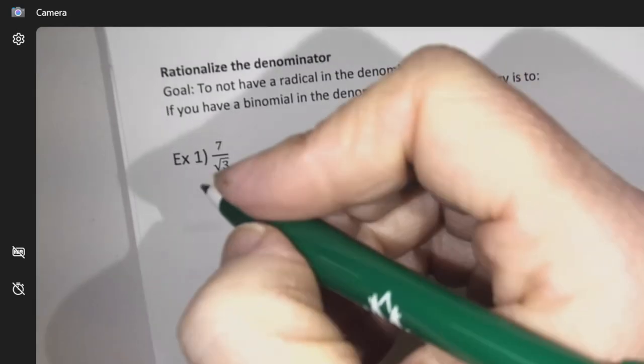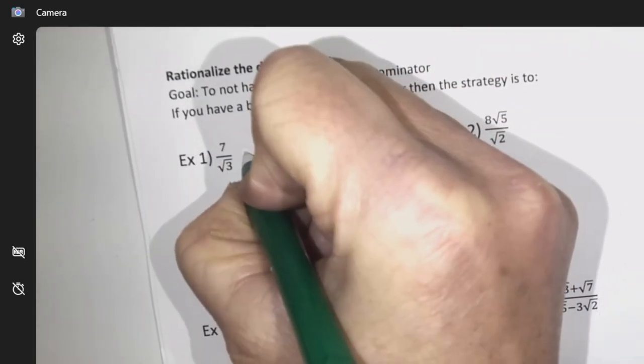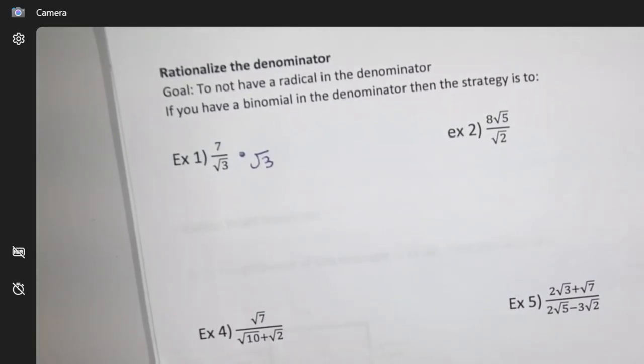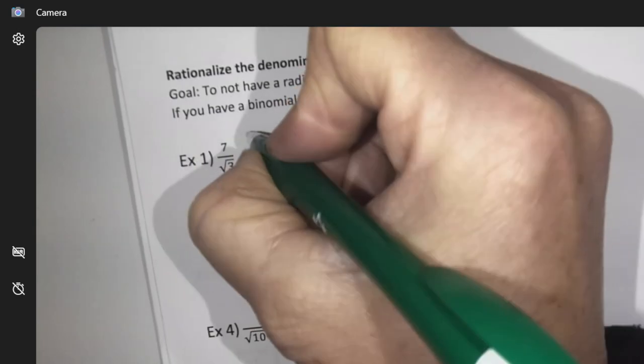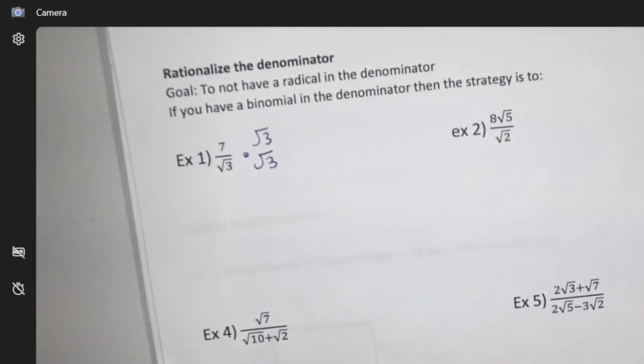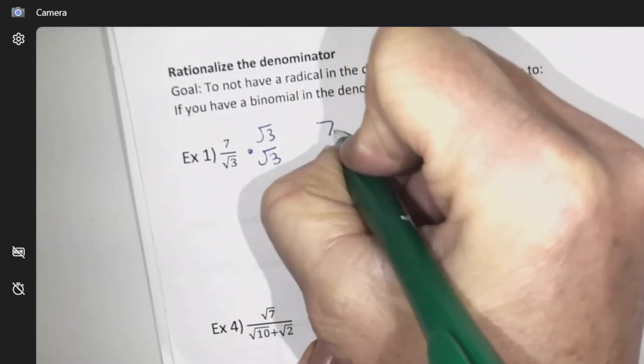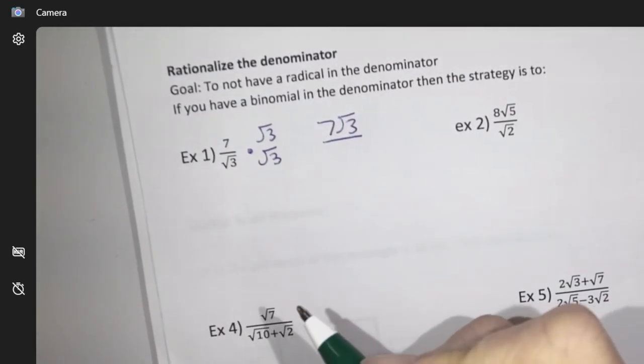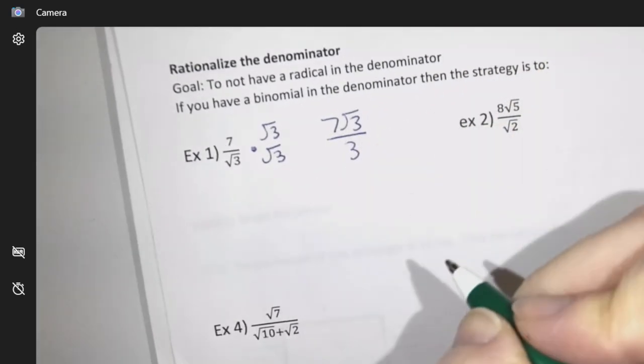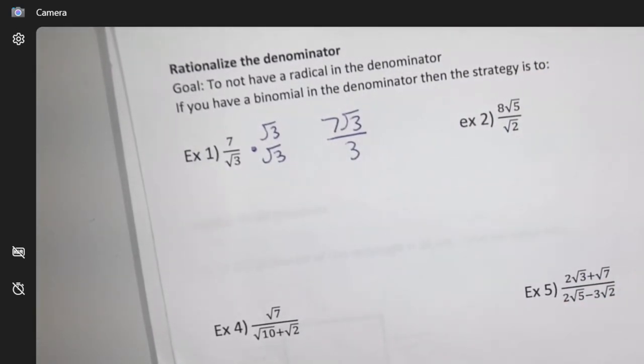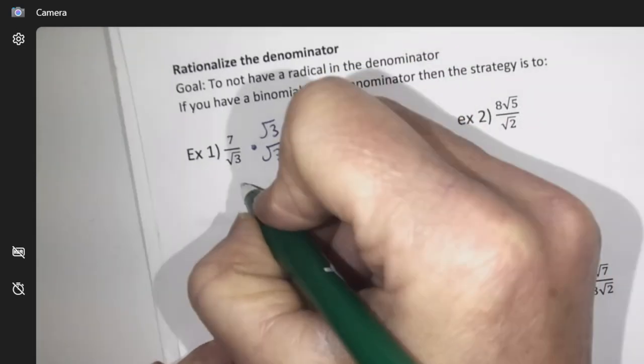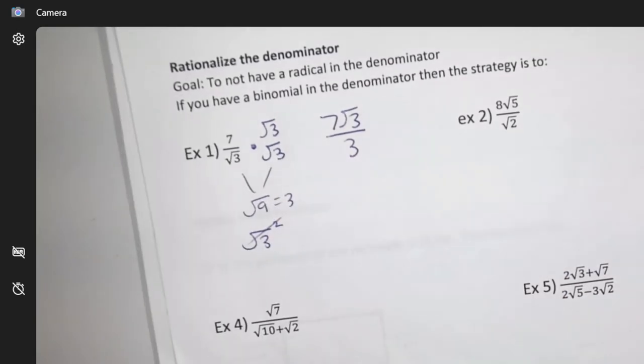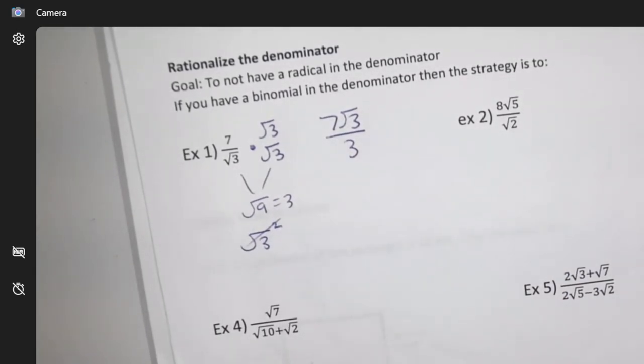Math doesn't really like you writing a square root on the bottom, so we're going to get rid of it. What I'm going to do to get rid of a root 3 is I'm going to times it by a root 3, but what do you do if you do something to the bottom? You do that to the top. So this would become 7 root 3, and then what is root 3 root 3? Just 3, because it's root 9 turning into a 3, or you can think about it as a root 3 squared which turns into a whole number 3.